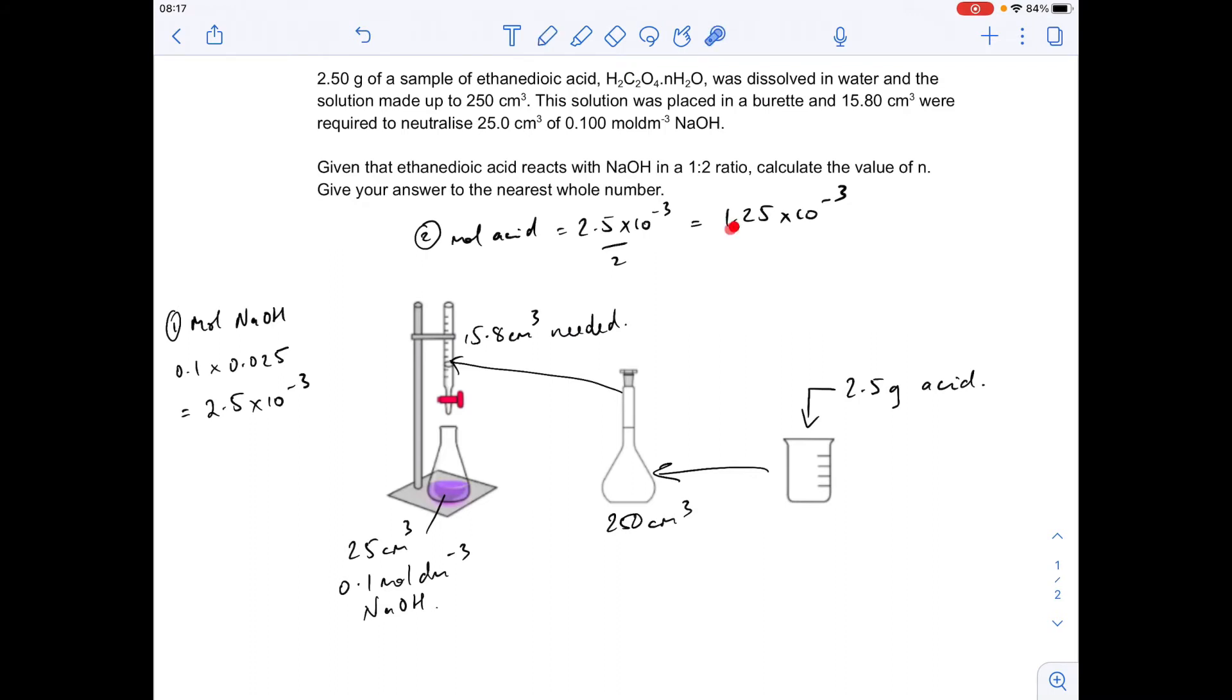Okay, so these moles here, these are present in that 15.8 cm³. Now we want to know how many moles of acid were present in this 250 cm³, and hence how many moles of acid must have been present in that 2.5 grams.